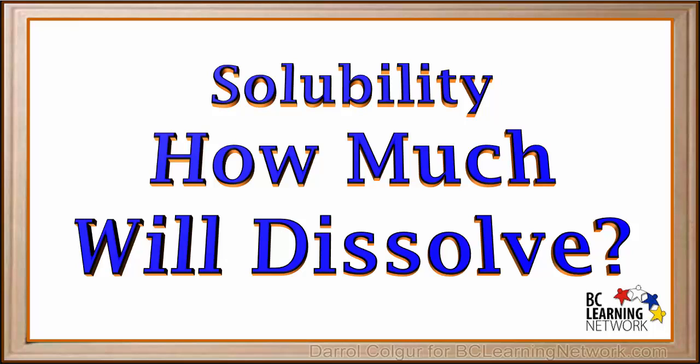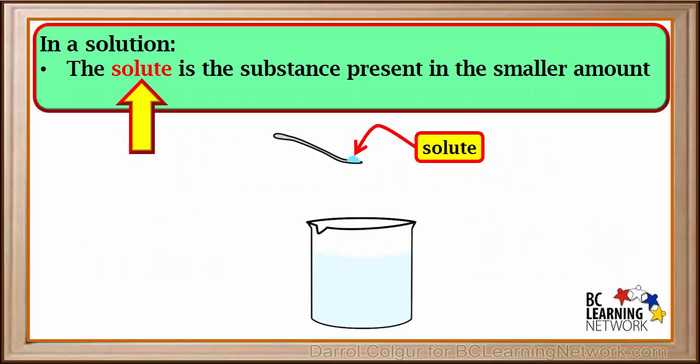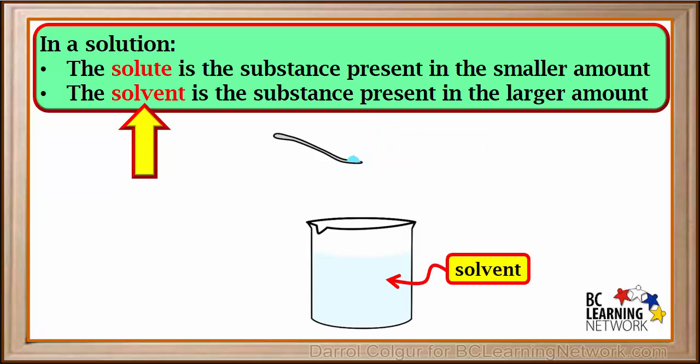Solubility is the ability to dissolve. Here we'll discover how much of one substance can dissolve in another one. In a solution, the solute is the substance present in the smaller amount, and the solvent is the substance present in the larger amount. The mixture of solute and solvent is called the solution.